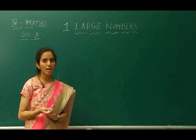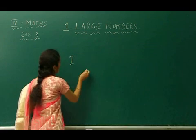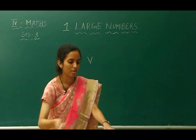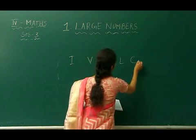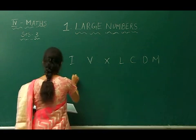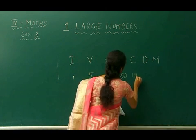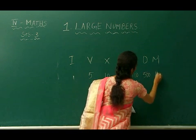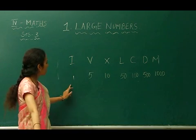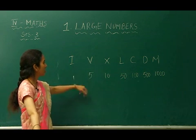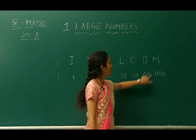Roman numerals are also a number system where we use different symbols to write numbers. The symbols are: I, V, X, L, C, D, and M. These symbols indicate these values: I means 1, V means 5, X denotes 10, L denotes 50, C denotes 100, D denotes 500, and M denotes 1,000.